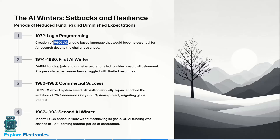From 1974 to 1980, the first AI winter occurred. DARPA funding cuts and unmet expectations led to widespread disillusionment, and progress stalled as researchers struggled with limited resources. Then from 1980 to 1983, commercial success returned — the R1 expert system saved $40 million annually, and Japan launched the ambitious Fifth Generation Computer System project, reigniting global interest.